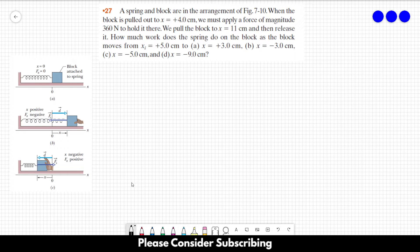Number 27: A spring and block are in the arrangement of this figure. When the block is pulled out to x = 4 centimeters, we must apply a force of magnitude 360 newtons to hold it there.